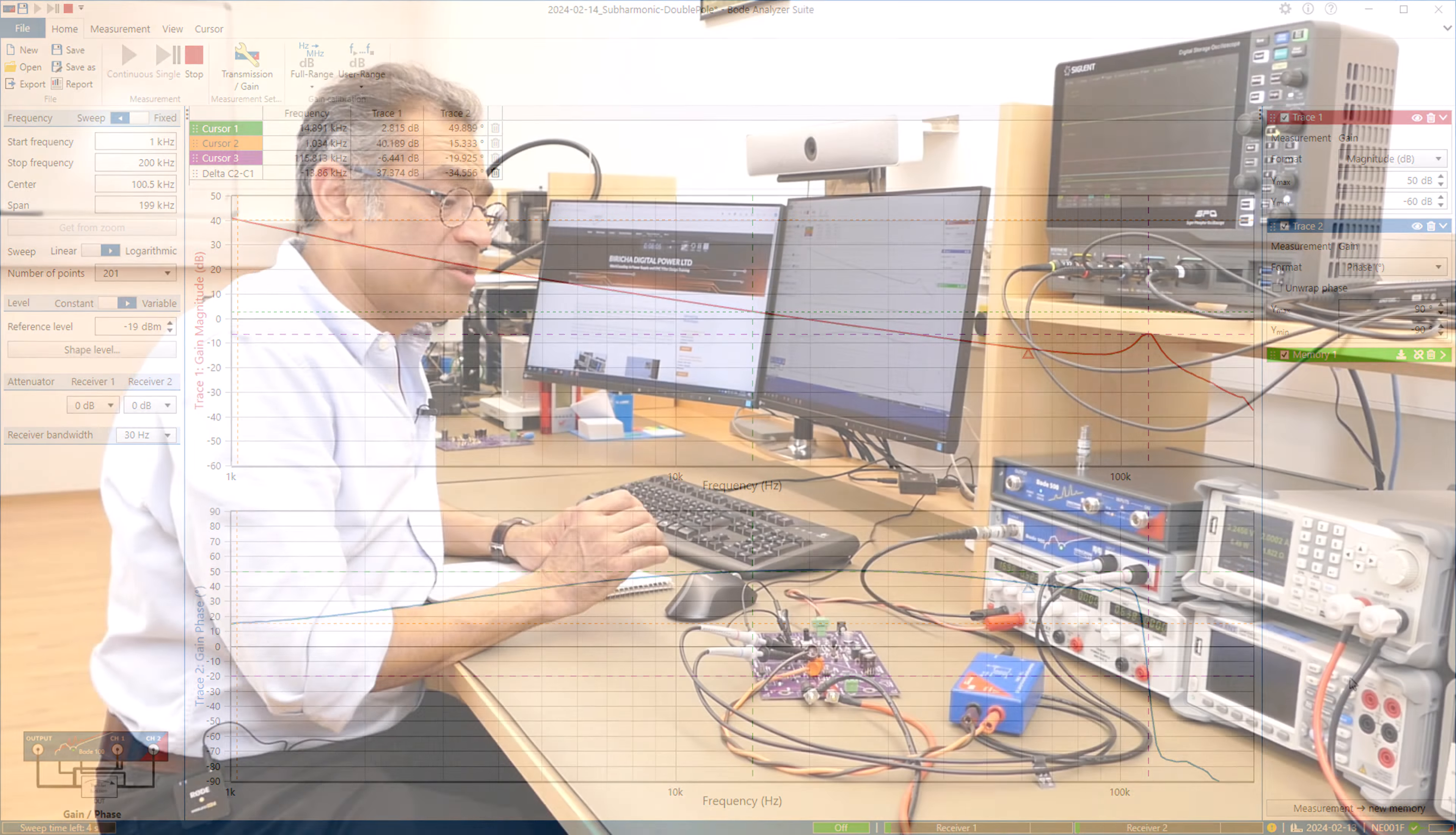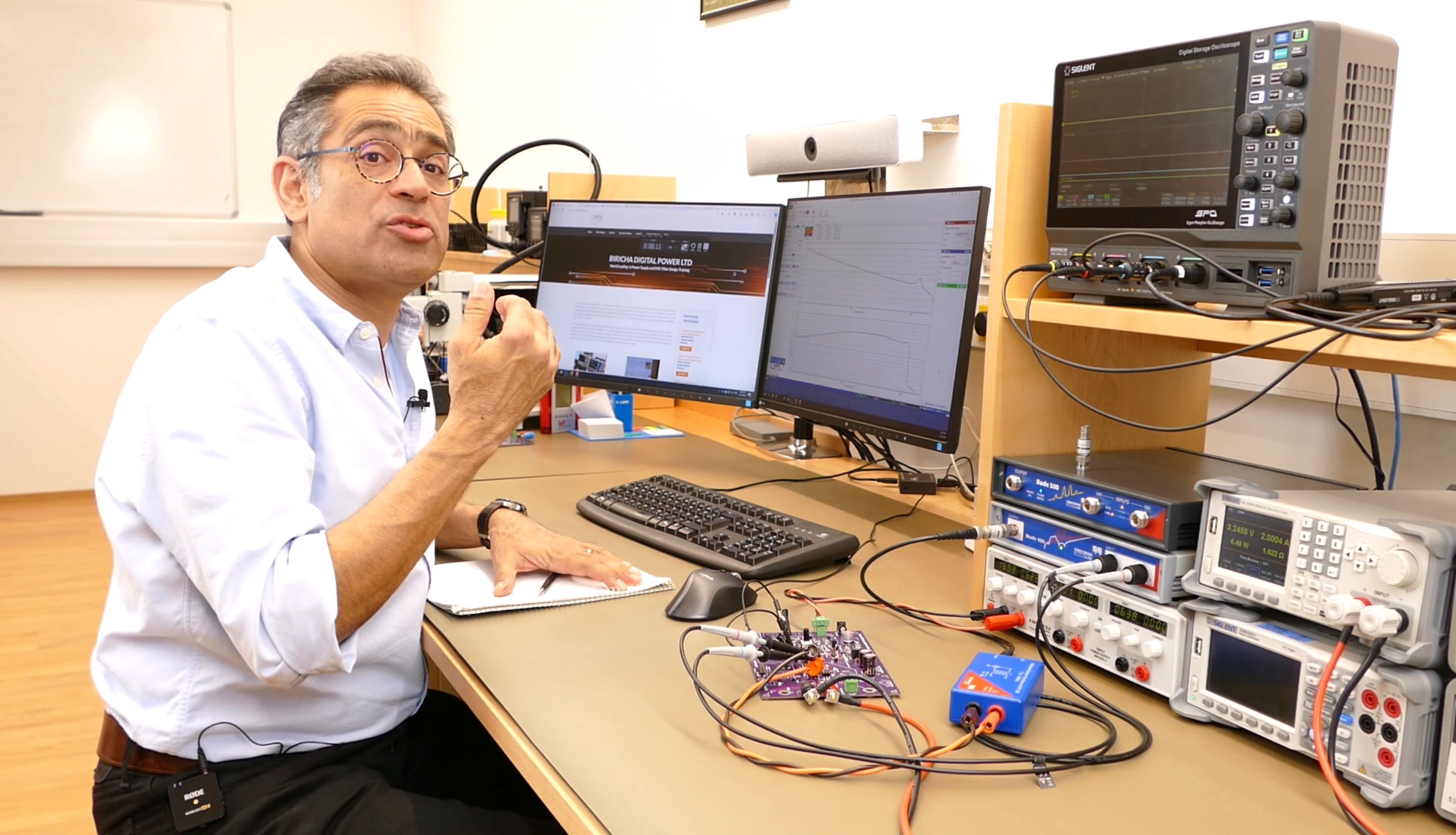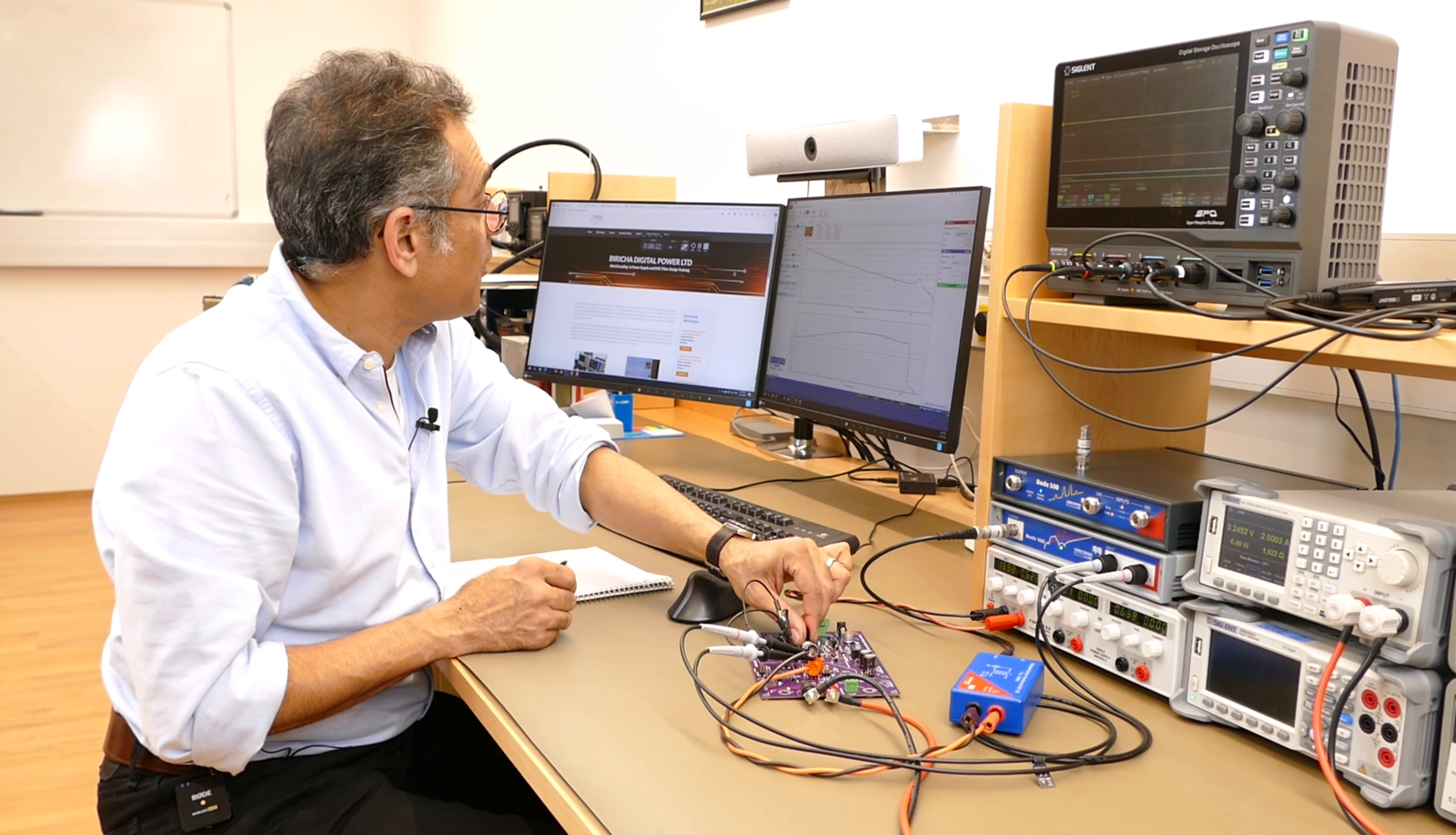And now what I'm going to do is I'm going to add some ramp. And what we said was that as we add ramp, we're going to damp the Q. And therefore, I expect this peaking to get lower. And I expect this phase loss to be shallower. So it's going to take a longer period for it to lose that much phase.